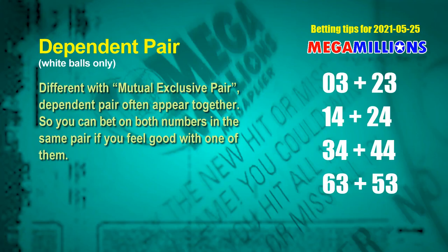Some numbers are mutual exclusive; some are dependent. Numbers in the same dependent pair often appear together in winning numbers of a draw, so you can bet on both. The white ball dependent pairs for the next draw are: first pair 03 and 23, second pair 14 and 24, third pair 34 and 44, fourth pair 63 and 53.